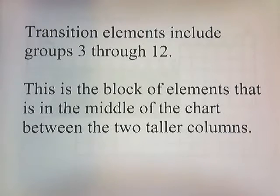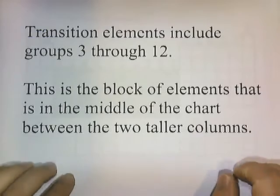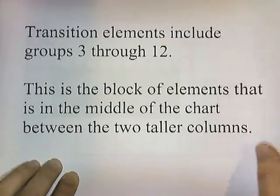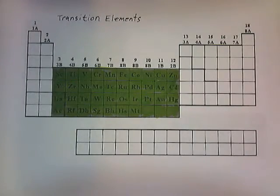Transition elements include groups 3 through 12. This is a block of elements in the middle of the chart between the two taller columns.